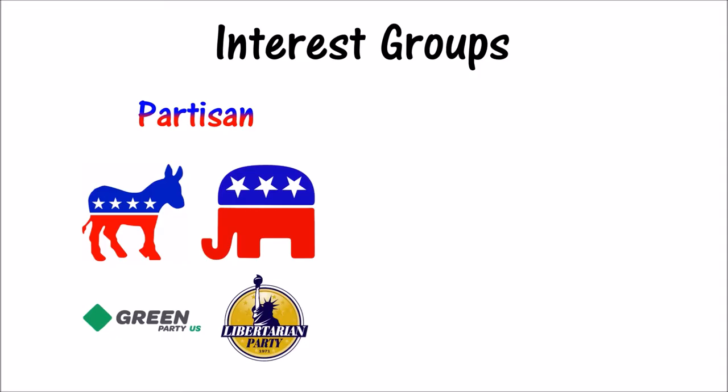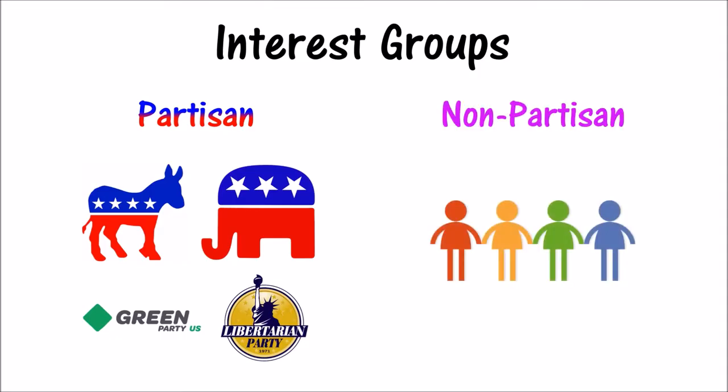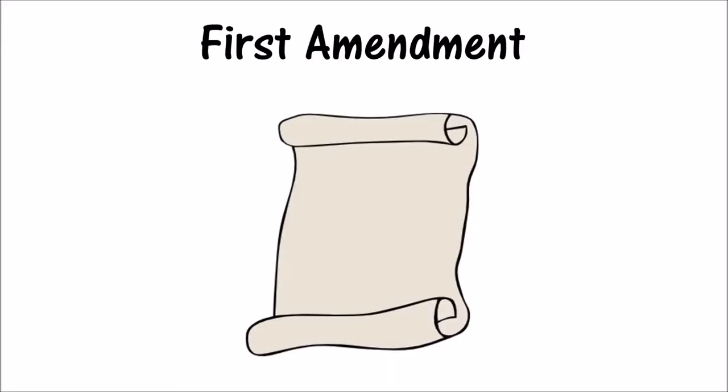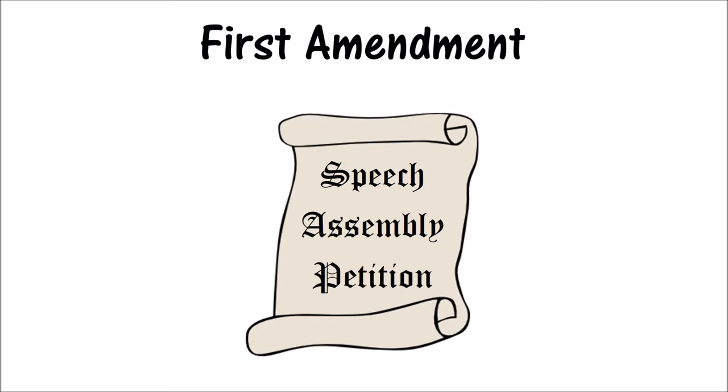Some interest groups are partisan, meaning they are closely aligned with a political party, and others are nonpartisan. In the U.S., interest groups are protected by the First Amendment, specifically the freedoms of speech, assembly, and petition.